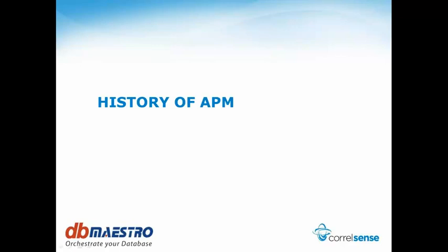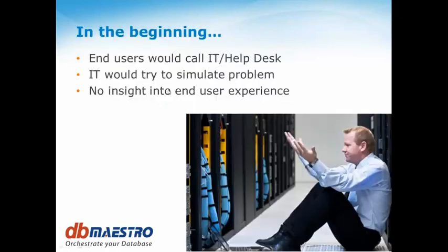To begin with, we'll talk about the history of APM, or Application Performance Monitoring, and how we got to where we are today. In the beginning, when we had our infrastructure and our applications, in terms of managing issues and problems, that was largely driven by finding things out from the end users.